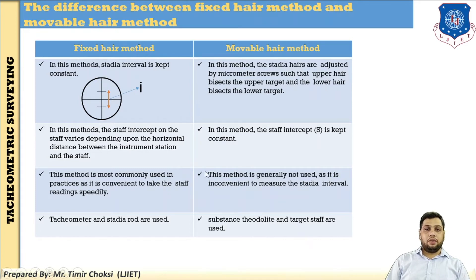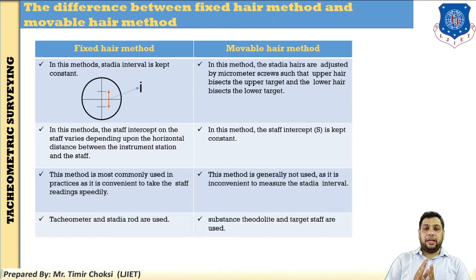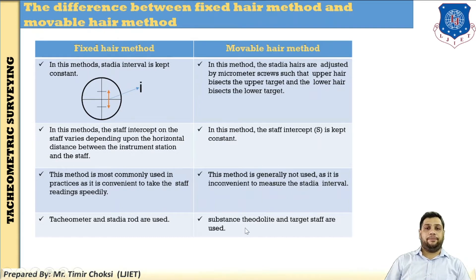Some special instruments are used for finding horizontal and vertical distance using the movable hair method. Subtense bar and target staff are used in this method. So the major difference is: in the fixed hair method, i equals constant and S is not constant; in the movable hair method, i is not constant and S equals constant.